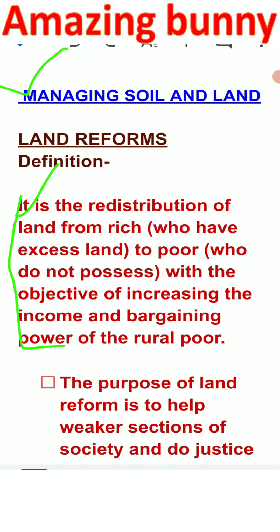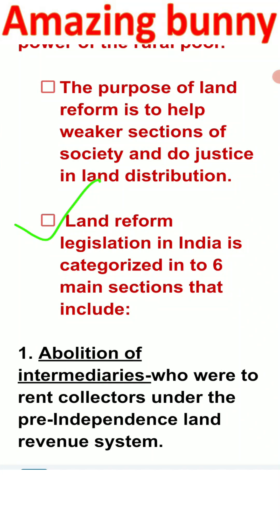The distribution should be equal — dividing land among the rural people so that they can perform cultivation. Land reform legislation means that directions are given by the central government, and the provisions of land reform laws are given by the central government, but otherwise it is under the control of the state government.